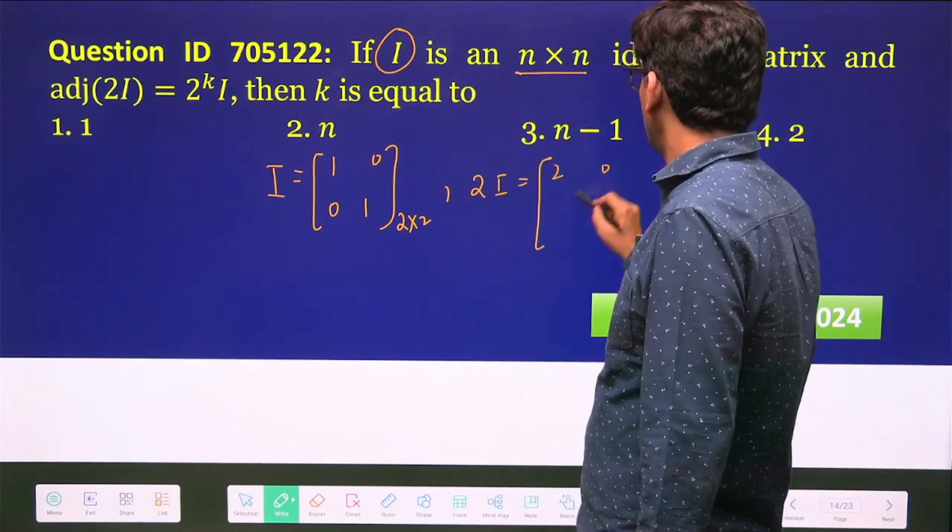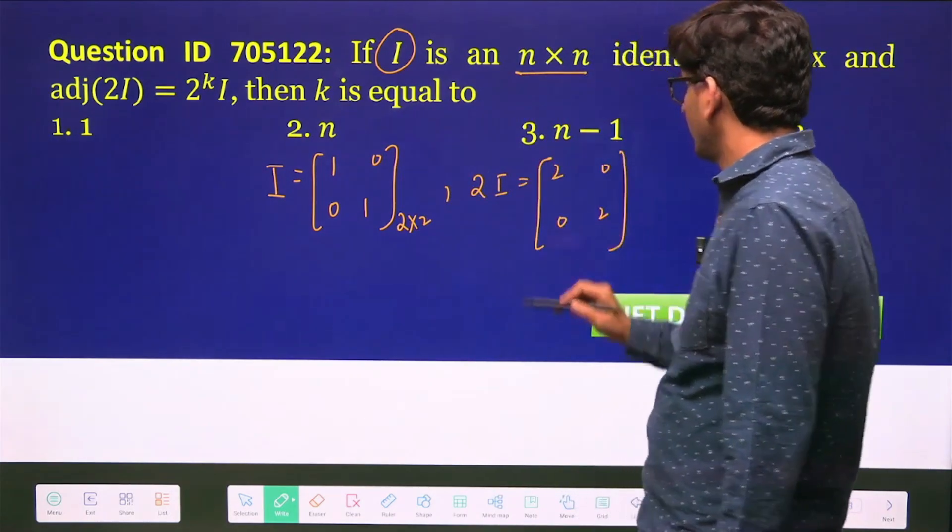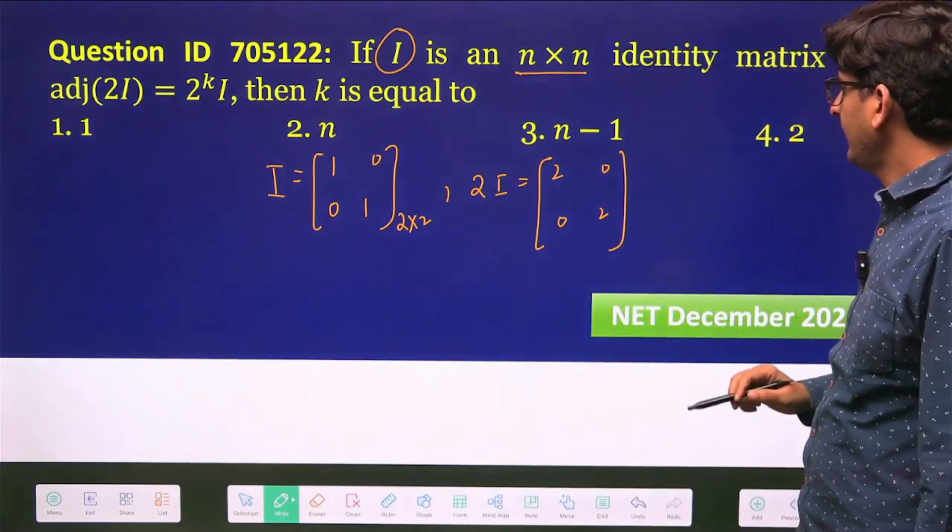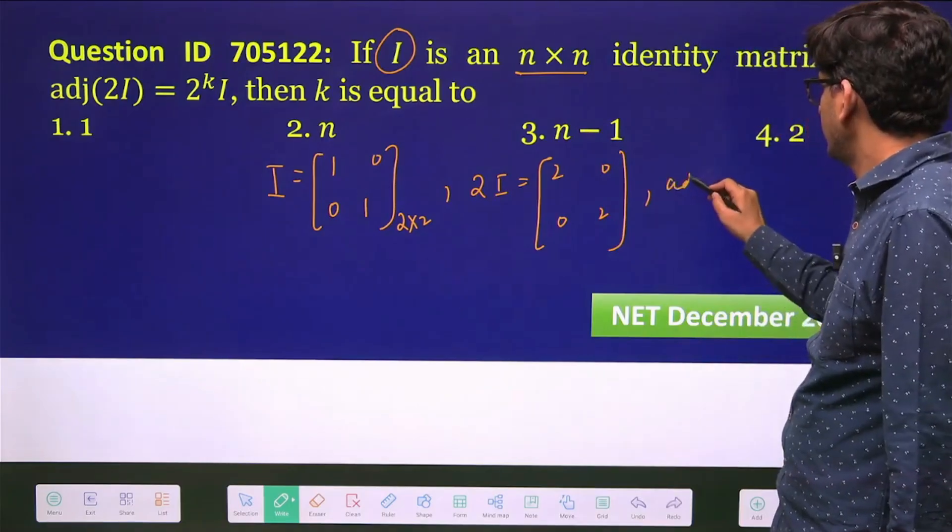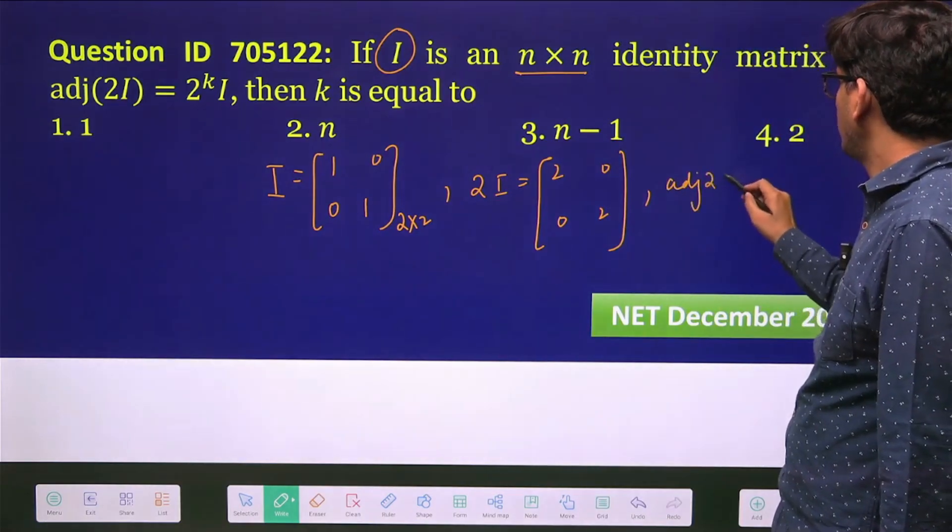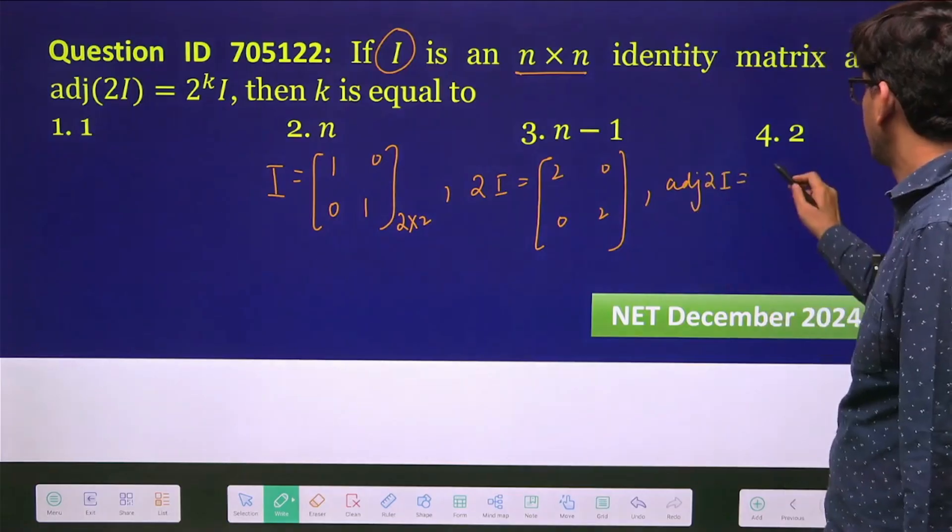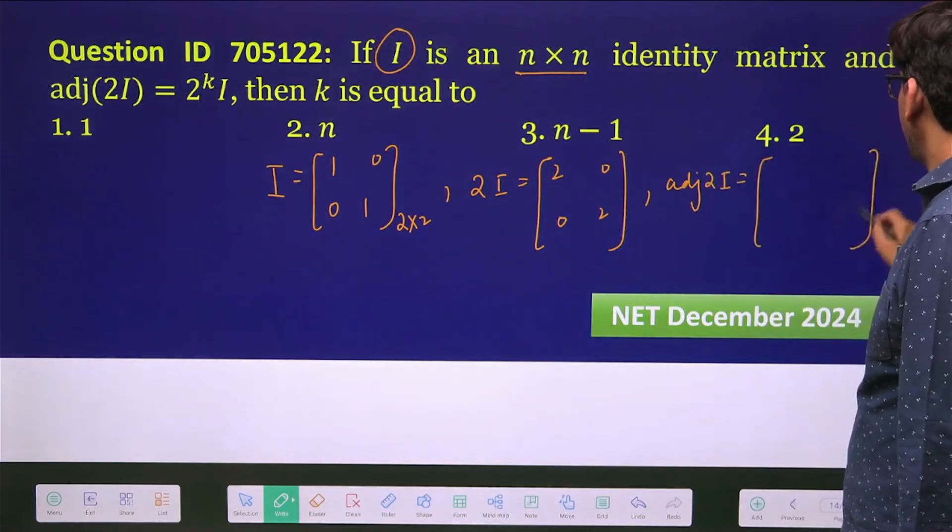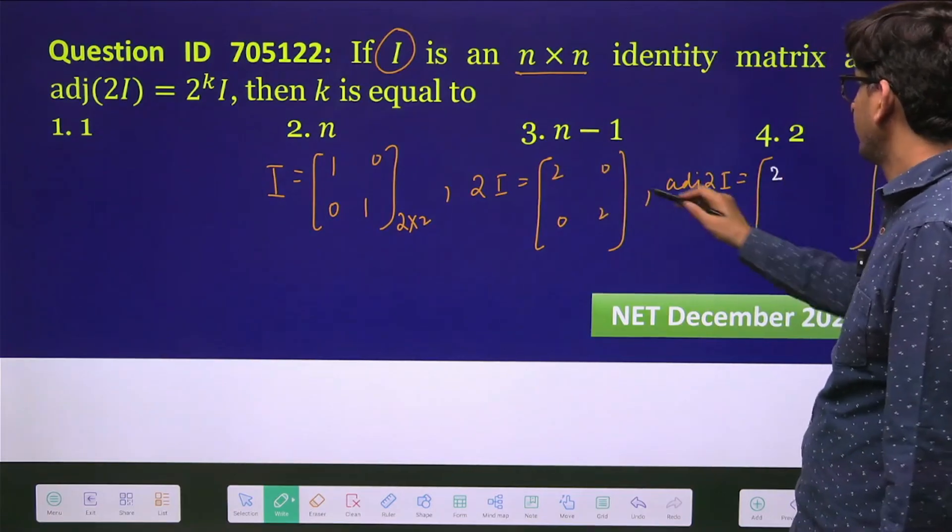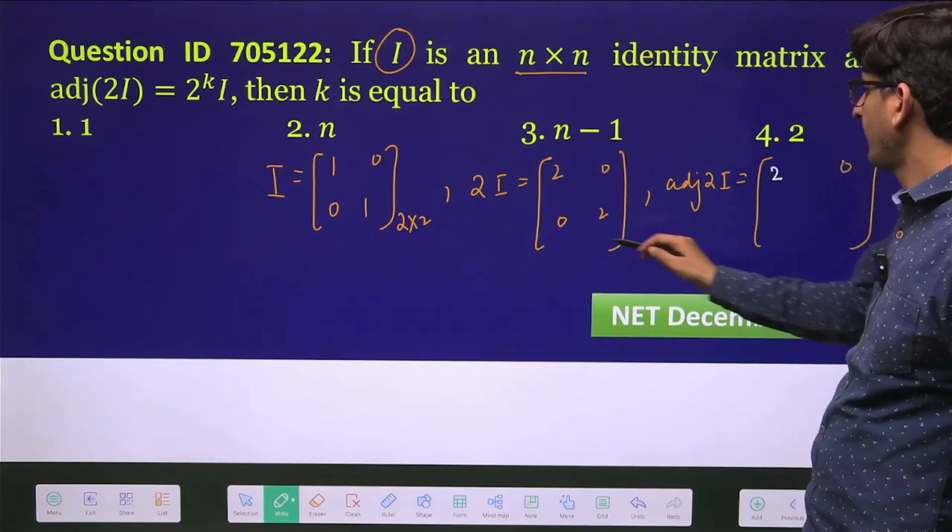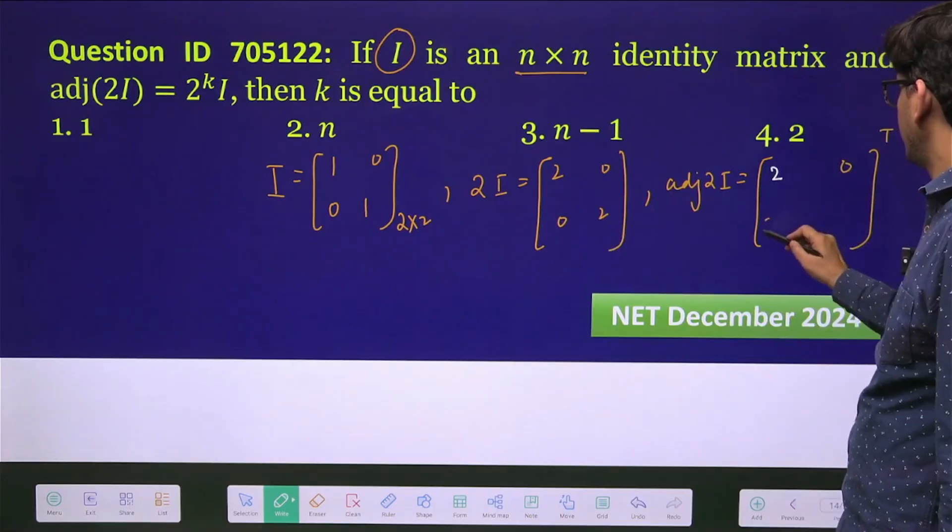And if you take adjoint of this 2I, you will get the cofactor matrix transpose. So what is the cofactor of this? It will become 2, 0, it will become 0, then this will become 0, and for this it will become 2.